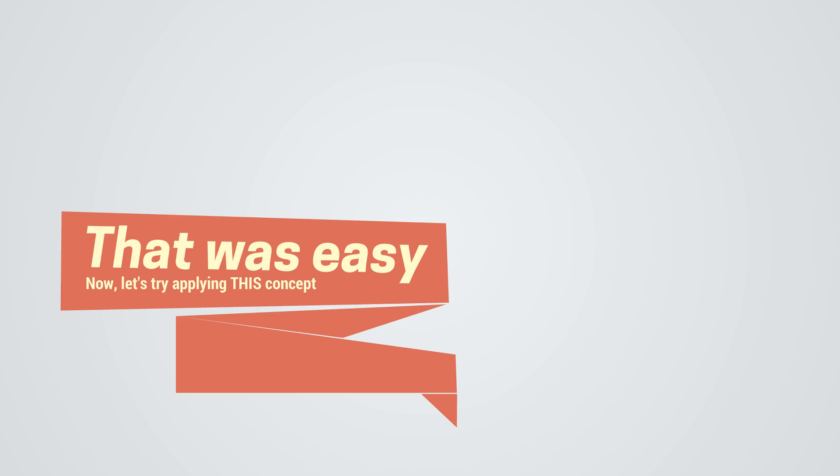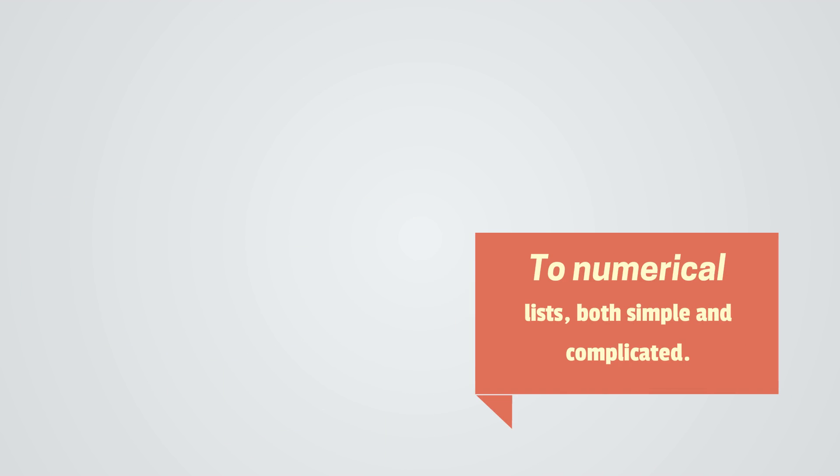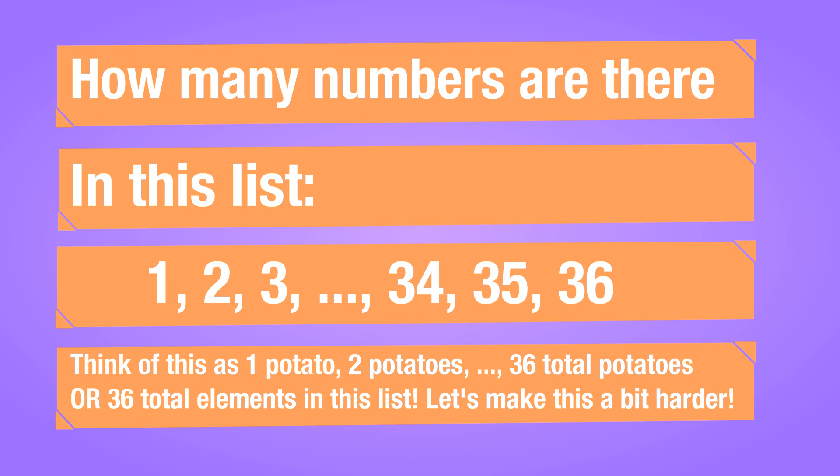That was easy. Now let's try applying this concept to lists with numbers, both simple and complicated. How many numbers are there in this list? 1, 2, 3, all the way to 34, 35, and 36. Think of this as one potato, two potatoes, and so on, all the way to 36 total potatoes, or 36 total elements in this list.